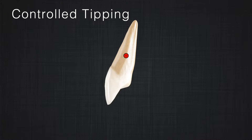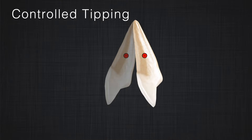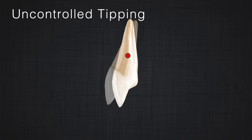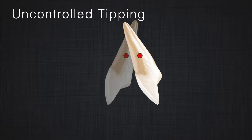The second one is controlled tipping. Where is the center of rotation here? In controlled tipping, the apex doesn't move, so the apex is the center of rotation. In the picture, the green point shows the center of rotation while the red point shows the center of resistance. The center of resistance displaces, but the center of rotation stays in the same place. In uncontrolled tipping, the center of resistance also displaces in space — you can see the red dot moving — however, there is a point between the apex and center of resistance that seems stationary, and that is the center of rotation.